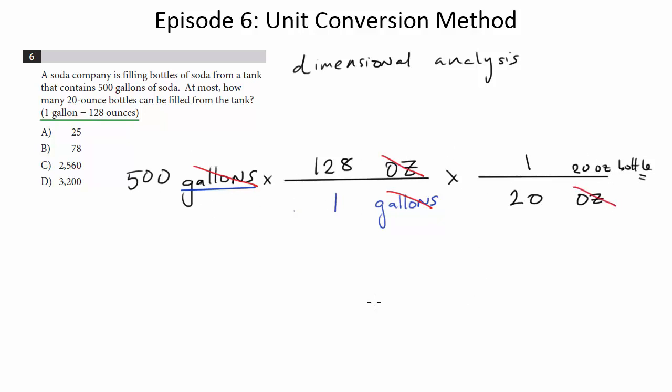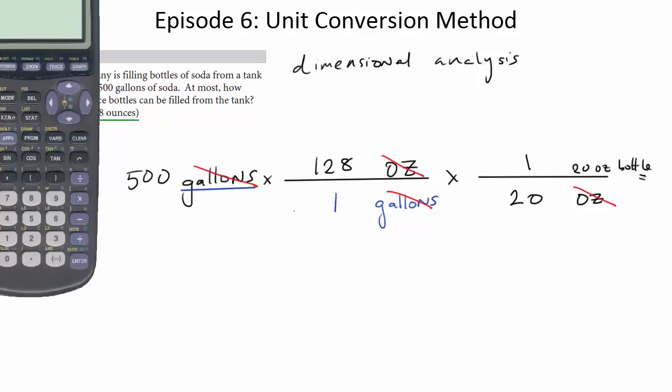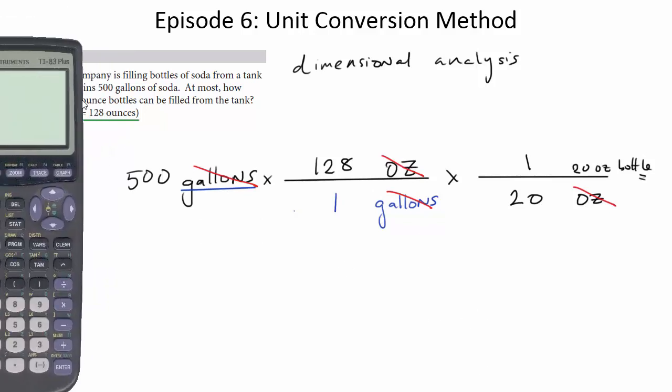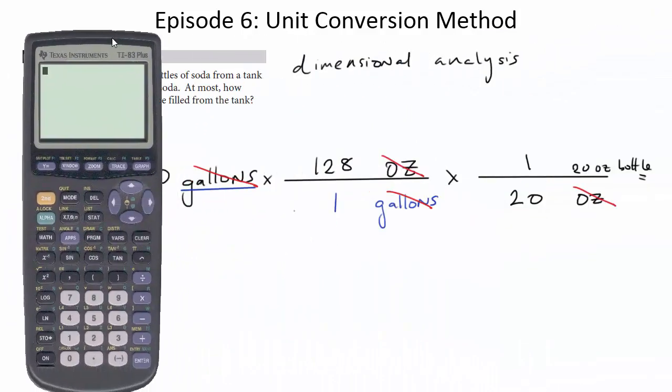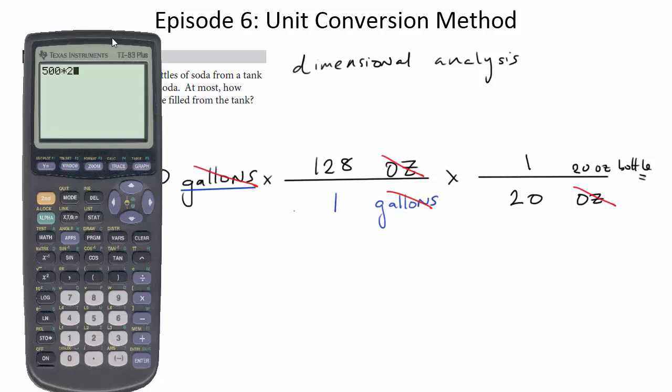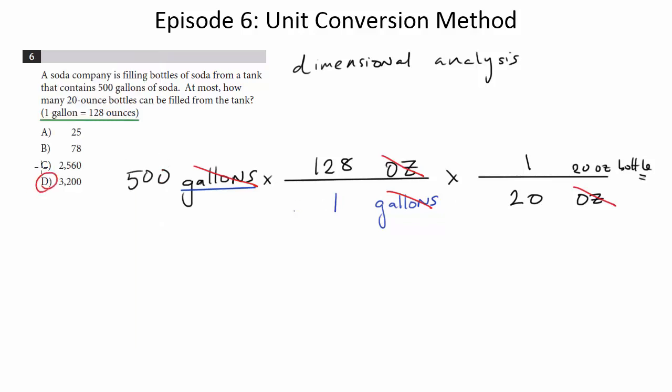Now we can just multiply and divide as necessary. So we're going to go ahead and we're going to multiply. 500 times 128. No good place to put this. 500 times 128. And then times 1 over 20. In other words, divide it by 20. So that gets us 3,200. And that's the answer.